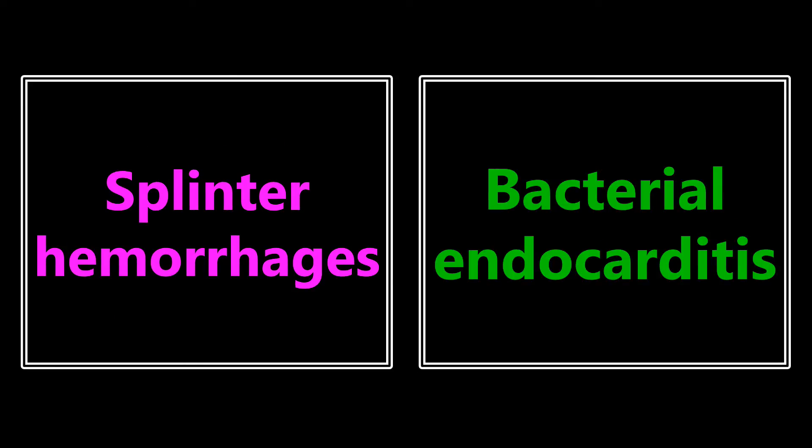Splinter hemorrhages — this is usually a sign of bacterial endocarditis. There are a lot of different buzzwords and pictures associated with bacterial endocarditis: splinter hemorrhages, Roth spots, Janeway lesions, Osler nodes — these are all different things. Definitely be able to identify them by name and also in pictures. That's very high yield.